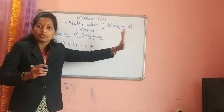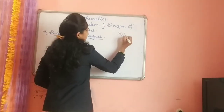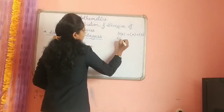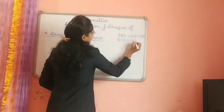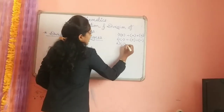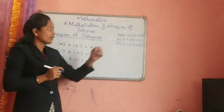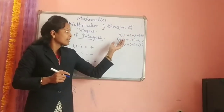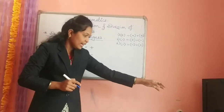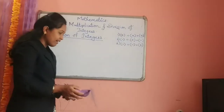So let me write down these rules. The first rule: plus divided by plus gives plus. Second: minus divided by plus gives minus. Third: minus divided by minus gives plus. These three rules are in front of us — we have to use these same three rules for division, just as we did for multiplication.